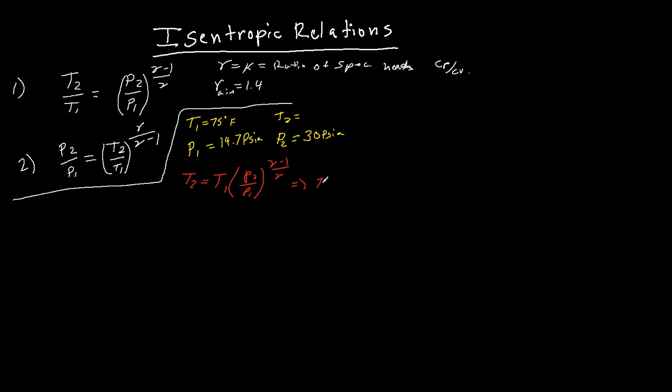So we've got 75 degrees Fahrenheit and 30 PSIA over 14.7. Okay, and then our ratio of specific heats up here, 1.4 minus 1 over 1.4. Now, as you can see, these pressure units are going to cancel and we'll be left with the temperature ones right here.